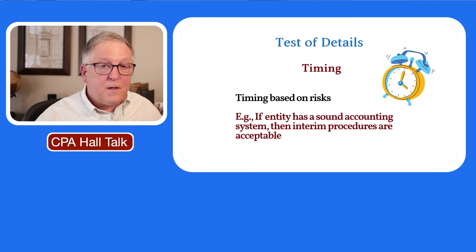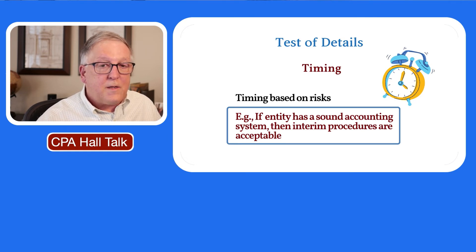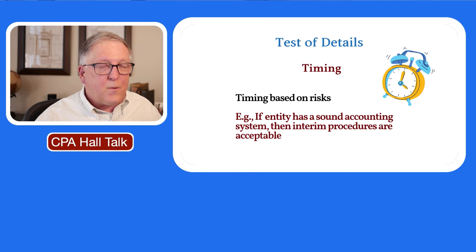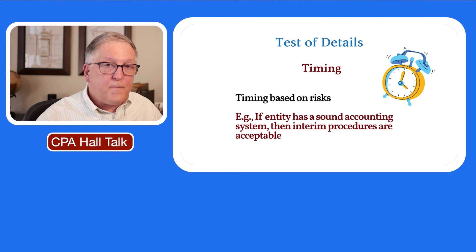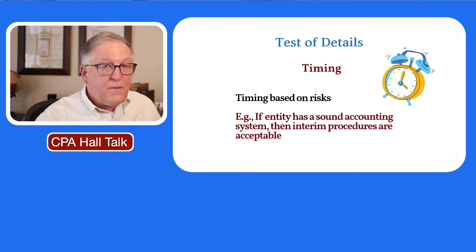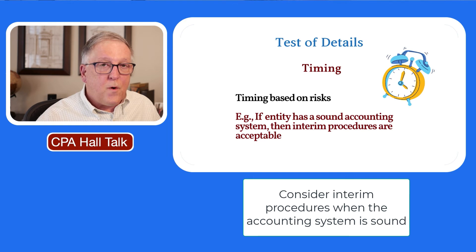There are other tests of details you could perform in October or November for a calendar year client — substantive tests of details — but you only want to do that if the entity has a sound accounting system. If their accounting system isn't reliable, you probably don't want to do interim procedures; you want to wait until year-end. Conversely, if a client has great accounting procedures and controls, think about whether you could perform a test of details early, like in October or November.